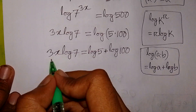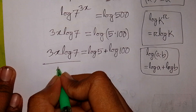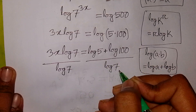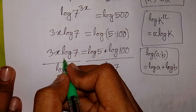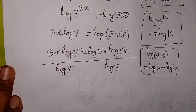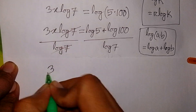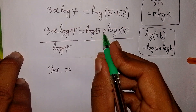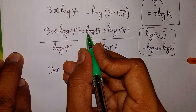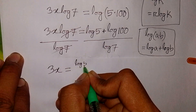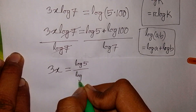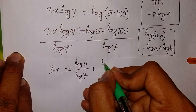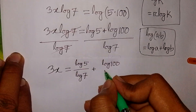Now we divide both sides by log 7, so log 7 is divided on both sides. This log 7 will cancel, so 3x is equal to log 5 over log 7 plus log 100 over log 7.